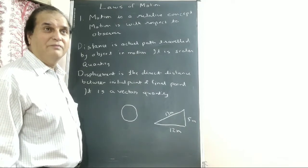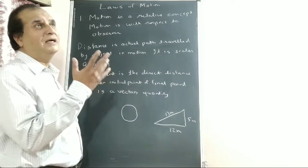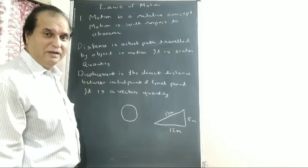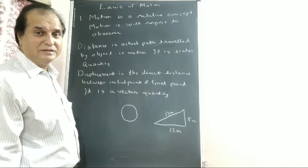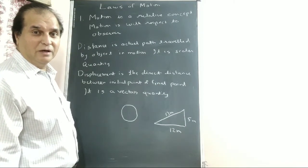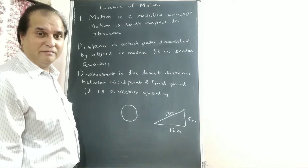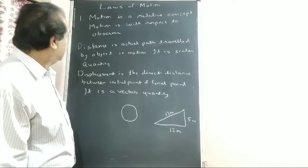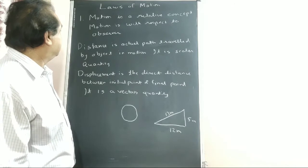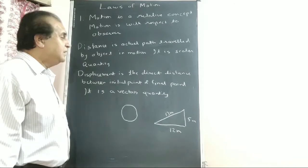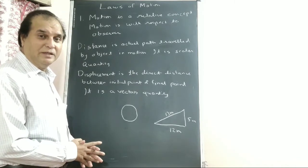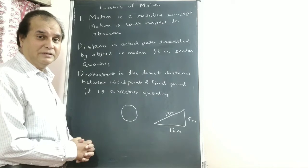So motion is with respect to the observer — always. It is a relative concept. We feel the moon is at rest, but no, the moon is moving. From Earth we feel the Earth is at rest, but no, the Earth is moving. This is just the concept of motion — motion is a relative concept.